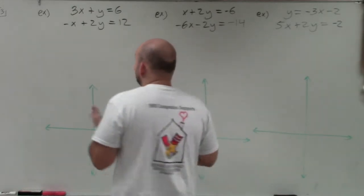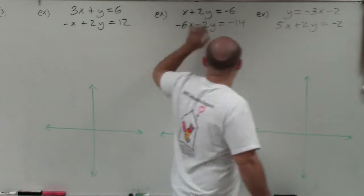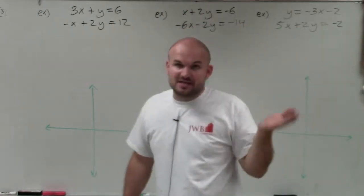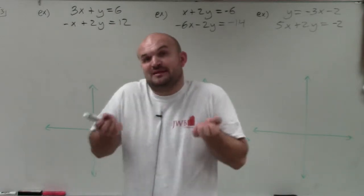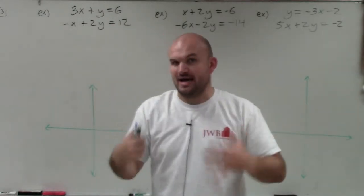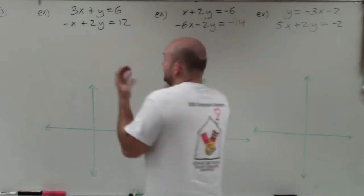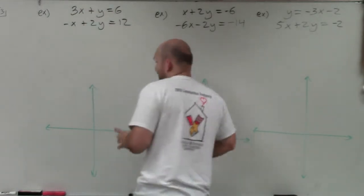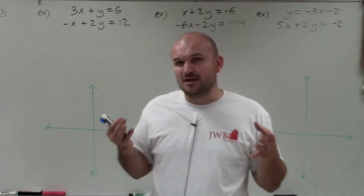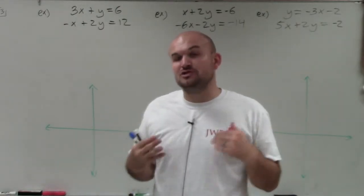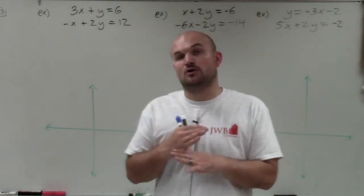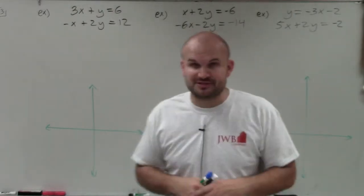We have a system of two equations and two variables, x and y. The solutions are going to be the values for x and y that make both of the equations true — meaning we could take those solutions and plug them into both equations. Where a solution is on a graph is going to be where the two lines cross, since we're talking about linear equations.